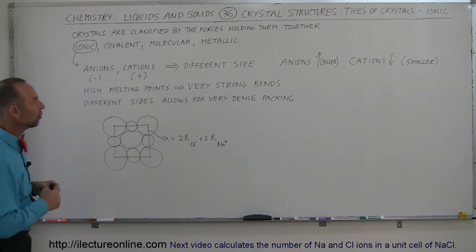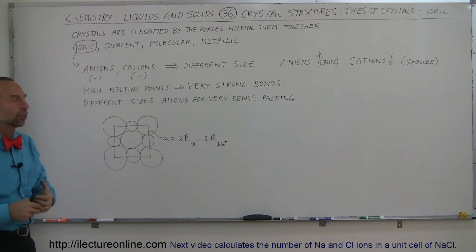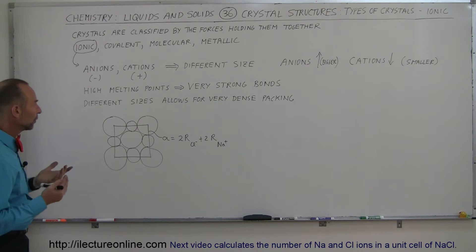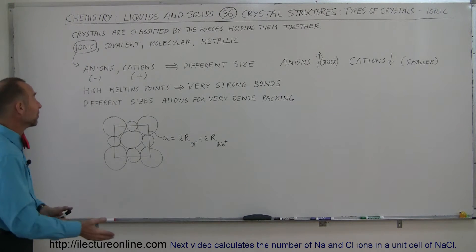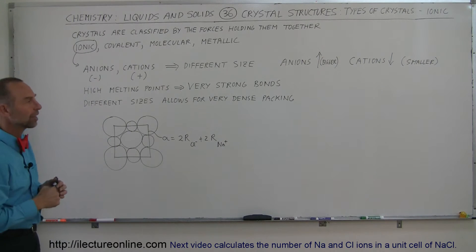We'll take a look at each one of those, and let's start with the ionic bonding, the ionic kind of crystals. Now, of course, when we deal with ionic bonding, that means you're dealing with ions, and we have the anions and the cations, so negative and positively charged ions.